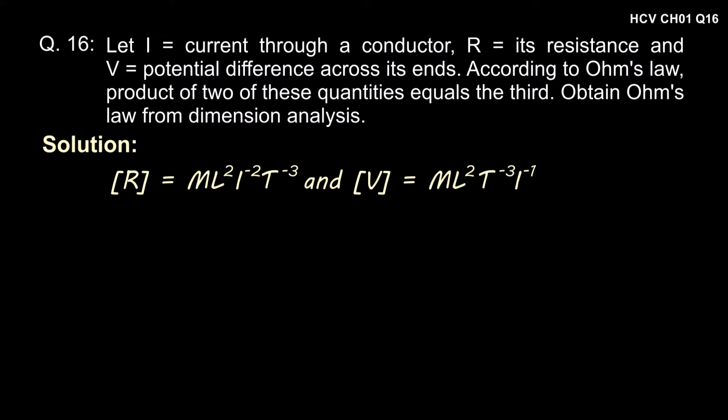As is given in the question itself, dimension of resistance is ML² I⁻² T⁻³ and dimension of potential difference V is ML² T⁻³ I⁻¹.